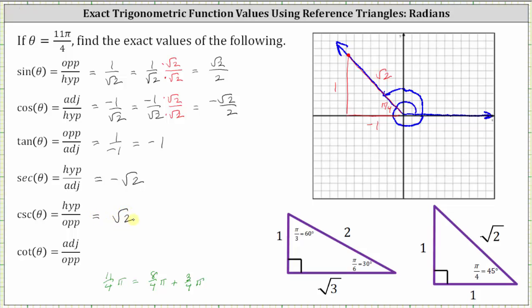Or using the reference triangle, the cotangent function value is equal to the reciprocal of the tangent function value. The reciprocal of negative one is still just negative one. Using the reference triangle, the cotangent function value is equal to the ratio of the adjacent side to the opposite side, which is negative one divided by one, which is negative one.